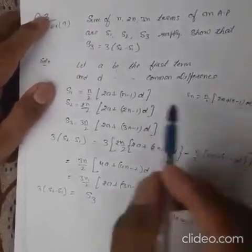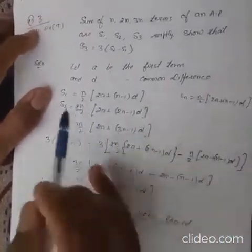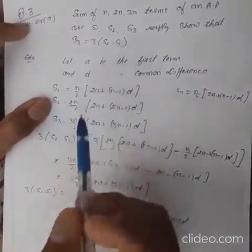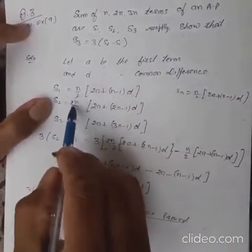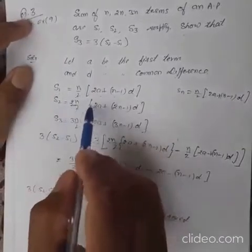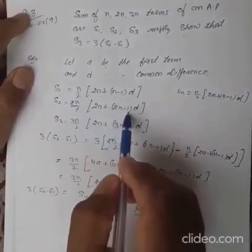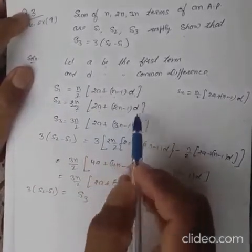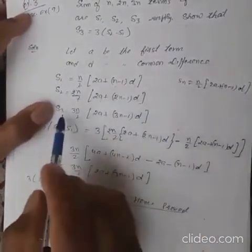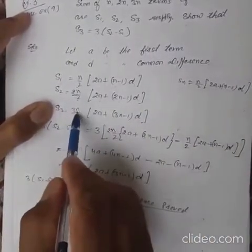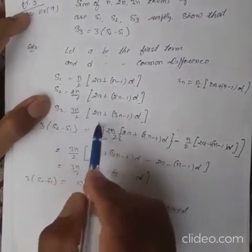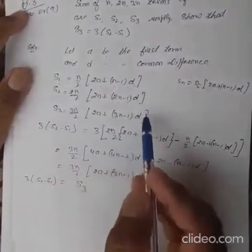Using the same formula, S2 is the sum of 2n terms, where the number of terms is 2n. So S2 equals 2n upon 2 into 2a plus 2n minus 1 into d. Similarly, S3 is the sum of the first 3n terms, so S3 equals 3n upon 2 into 2a plus 3n minus 1 into d.